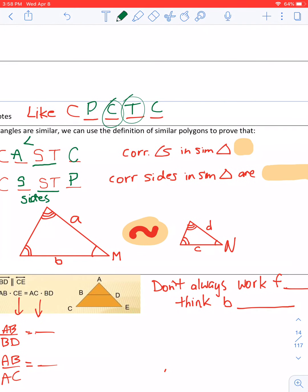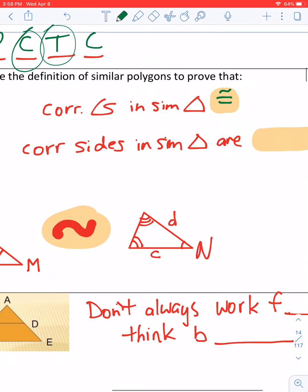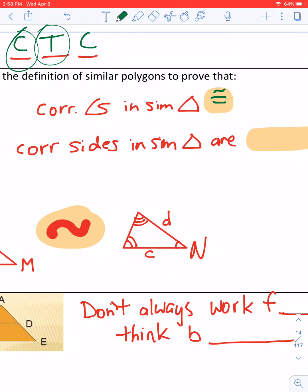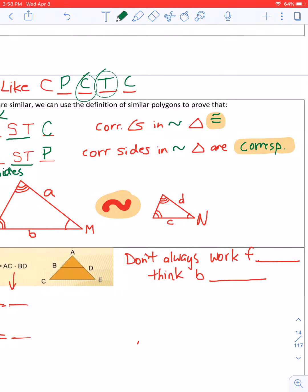Now again, you don't have to use those acronyms. You can just say corresponding angles in similar triangles are congruent, and corresponding sides in similar triangles—I don't know why I abbreviated sim, we have a symbol for that, don't we—are proportional.